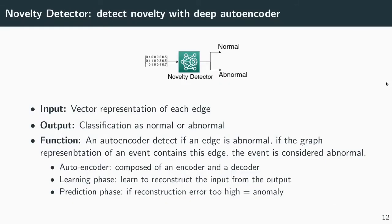The third module is the novelty detector. This module takes the vectors previously linked and predicts if the corresponding edge is normal or abnormal. If the graph representation of this event contains this edge, the event is also considered as abnormal.